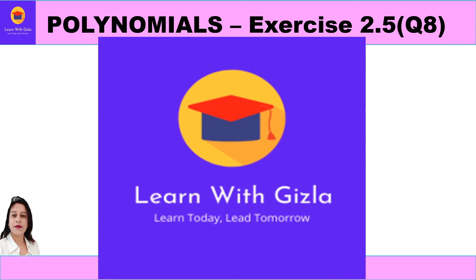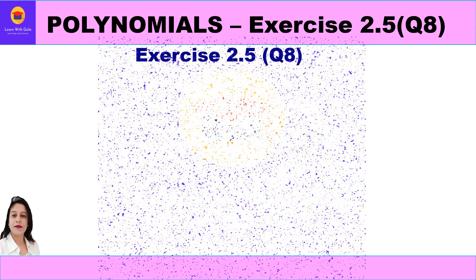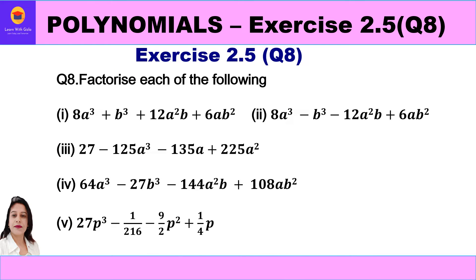Hello dear students, welcome to YouTube channel Learn with Gizla. In this video on polynomials, we shall be taking question 8 of exercise 2.5. Question 8 says: factorize each of the following. There are five products given to us and we have to find their factors. Since every product has cubes, we are going to use cubic identities — that is, (a+b)³ or (a-b)³. Let us start with the first part.